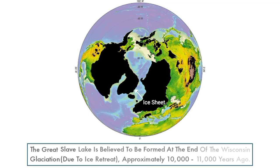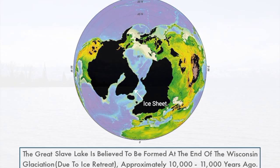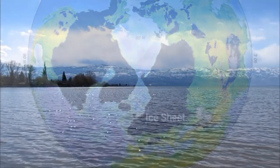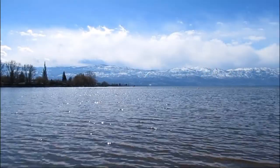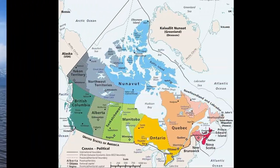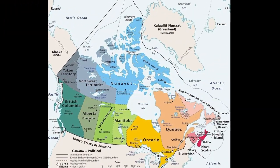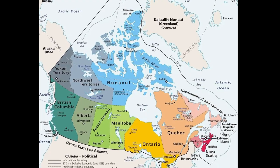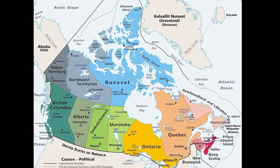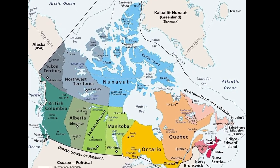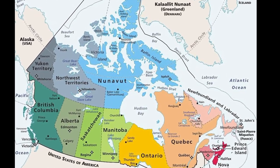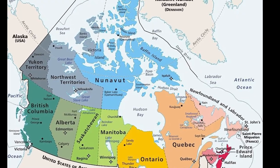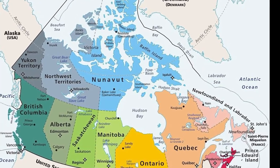The Great Slave Lake is believed to have formed at the end of the Wisconsin glaciation, approximately 10,000 to 11,000 years ago, and was part of the larger ancient lake called Lake McConnell, which existed in what is now Canada from 11,000 to 8,300 years ago. The lake covered parts of what are now the Great Bear Lake, Great Slave Lake, and Lake Athabasca.